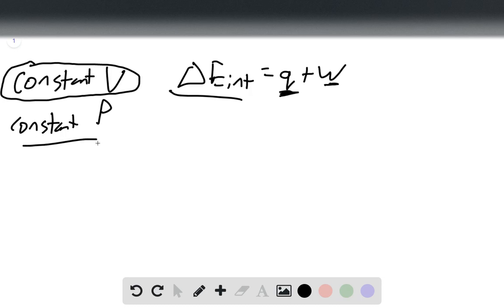If we did it at a constant pressure then the gas would expand in order to keep that constant pressure, and in that expansion would do some amount of work. Since it'll do some amount of work it'll lower the amount of heat.